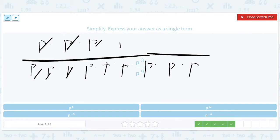So you're basically just counting the number of p's and subtracting them to see how many you end up with on top or on bottom. So three minus nine is negative six so you'll get p to the negative six.